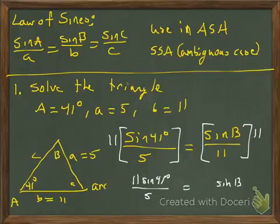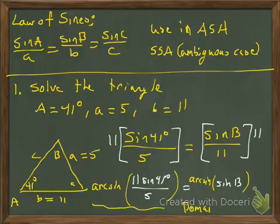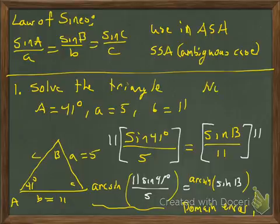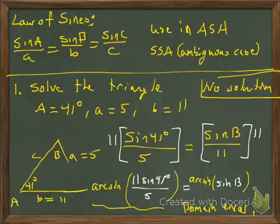To undo the sine, we take the arc sine of both sides, and the arc sine and sine will undo each other. When I plug this into my calculator — making sure I'm in degrees — it's going to tell me a domain error, which means I don't have a triangle. So this is no solution. My triangle probably looks like it doesn't quite have enough length on side a for a complete triangle. That's a no-triangle solution.